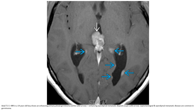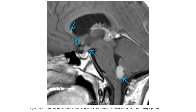T1C+ MRI in a 14-year-old boy shows an enhancing primary pineal germinoma with enhancing ependymal metastatic deposits. Leptomeningeal and ependymal metastatic disease are common in germinoma. The same patient shows multiple metastatic regions from CSF dissemination, a common finding in germinoma.